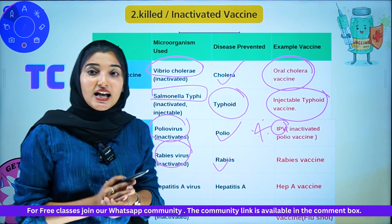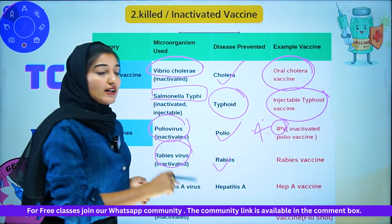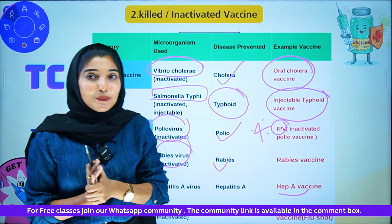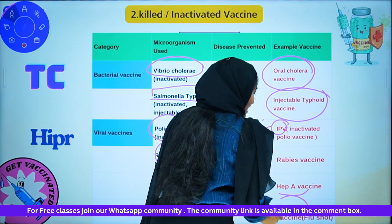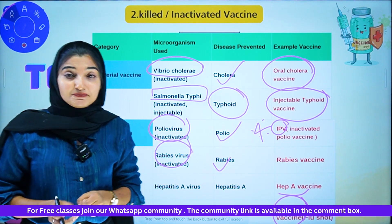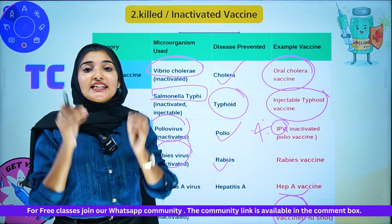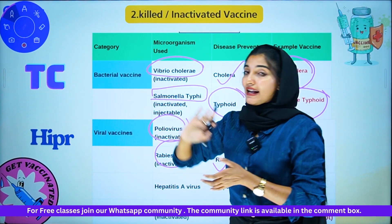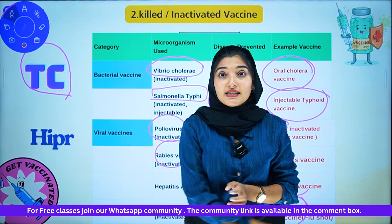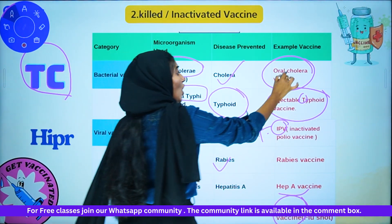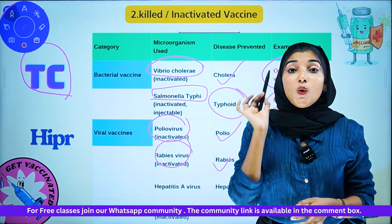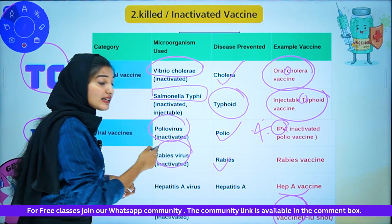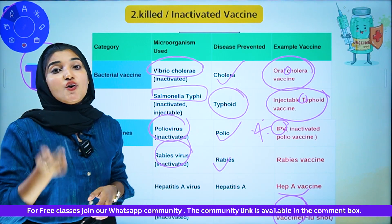Hepatitis A vaccine is a killed/inactivated vaccine for Hepatitis A disease. Influenza vaccine — also called flu shot — uses the influenza virus and is a killed/inactivated vaccine. To summarize killed/inactivated vaccines: bacterial vaccines use the mnemonic 'TC' — T for typhoid (injectable), C for cholera. Viral killed vaccines use the mnemonic 'HIPR': H for Hepatitis A, I for Influenza, P for Polio (IPV), R for Rabies.